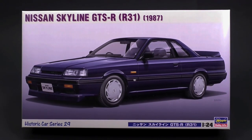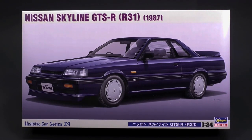It is the Nissan Skyline GTS-R R31 for the 1987 model year from Hasegawa Hobby Kits, and it is today's What's-in-the-Box look.